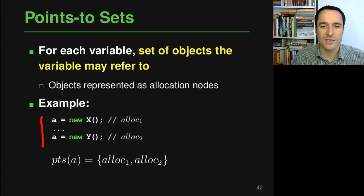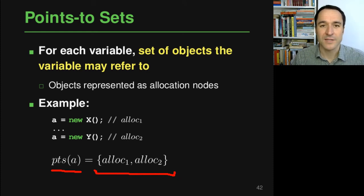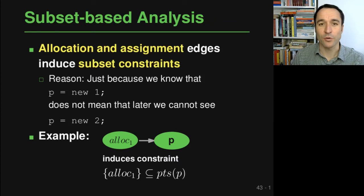As a simple example, if we have two allocation nodes where we instantiate classes X and Y in different locations of the code and both times write the result into the same variable a, then the points-to analysis will tell us that the points-to set of a contains these two allocation nodes. Because we know the types of each allocation, we can see that variable a may have types X and Y. An important question is how to reason about allocation and assignment edges — and the answer here is a subset-based analysis.